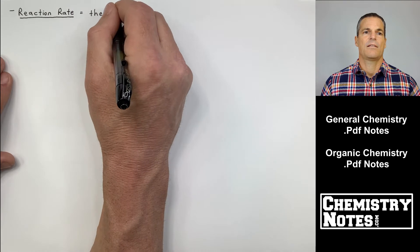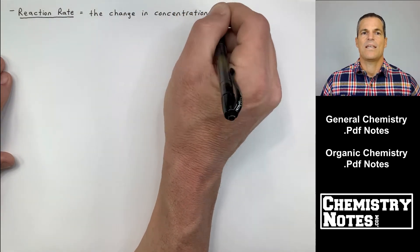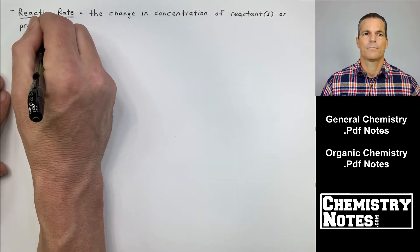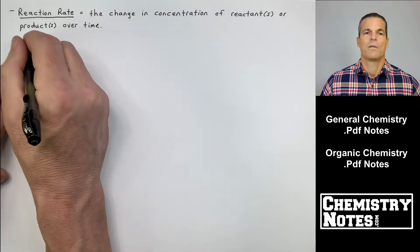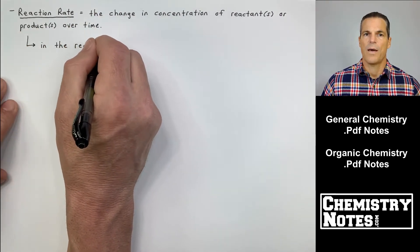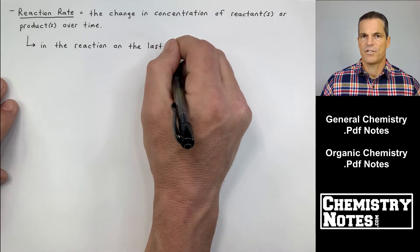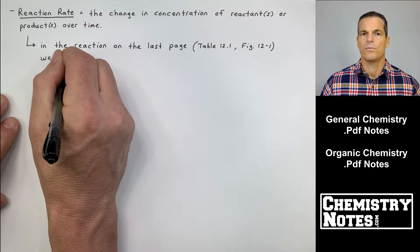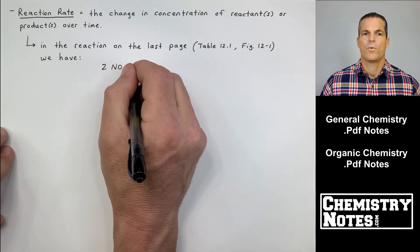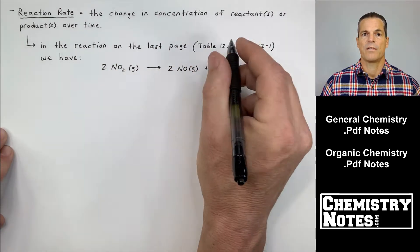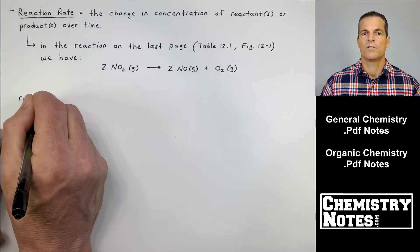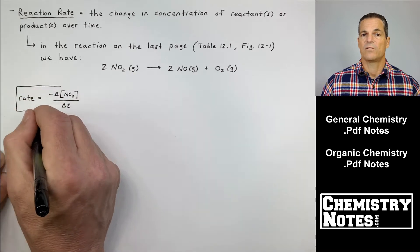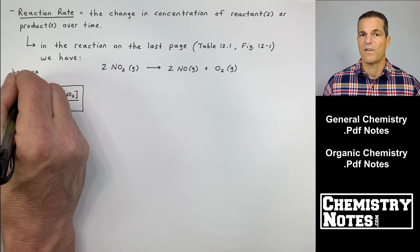Reaction rate is the change in concentration of reactants or products over time. In the reaction we just looked at, NO₂ decomposed into NO plus O₂. The balanced equation is: 2NO₂(g) → 2NO(g) + O₂(g). We can express the reaction rate in terms of the reactant or in terms of either product — it doesn't matter.